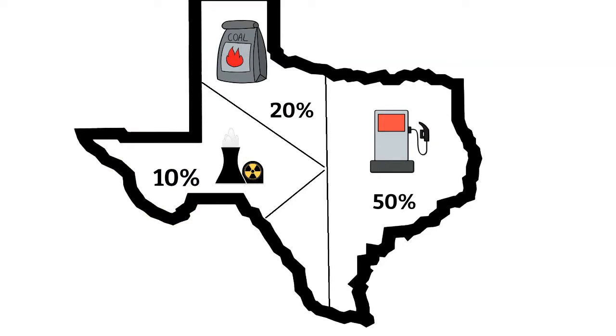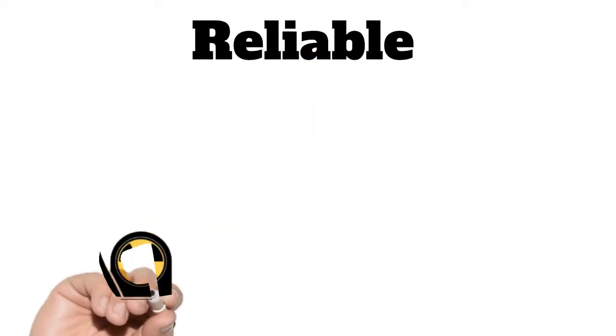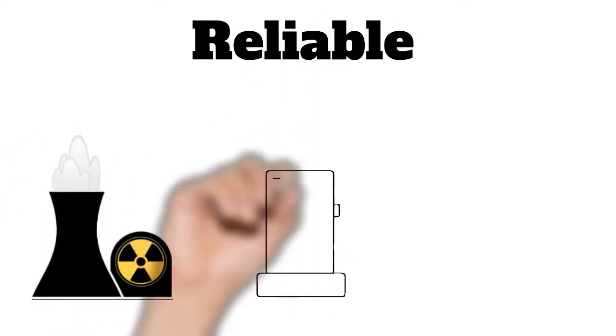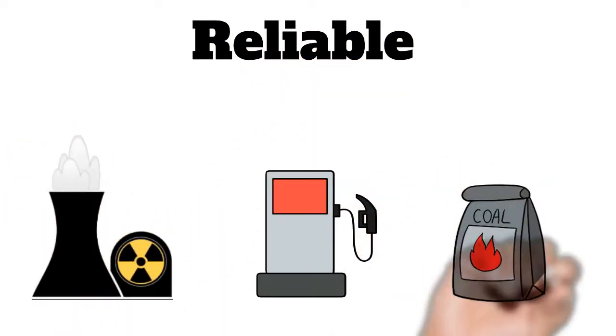Coal is at 20%, and nuclear is at 10.8%. We call these sources of energy reliable energy. Because of the way they operate, these energy sources are reliable and relatively easily adjustable, depending on the need for electricity.